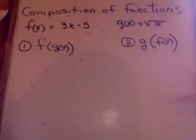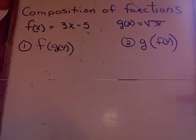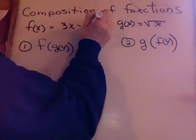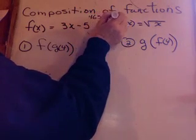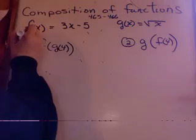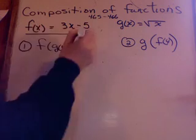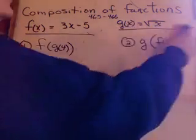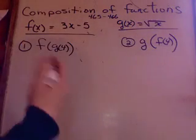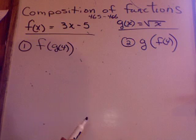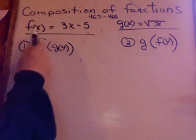Okay, I have a couple examples here of composition of functions, and this is to do page 465 and 466 of your homework. So I have two functions defined in function notation: f of x equals 3x minus 5, and another function, g of x equals root x. Now, when you're solving these, you have to pay attention and make sure you use the proper function with the proper number x.